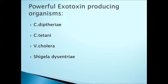Corynebacterium diphtheriae is a powerful exotoxin-producing organism. What are the other organisms also known as powerful exotoxin-producing organisms? They include Corynebacterium diphtheriae, Clostridium tetani, Bacillus anthracis, and Shigella. These are the organisms, and again a question can be asked — the powerful exotoxin-producing organisms.